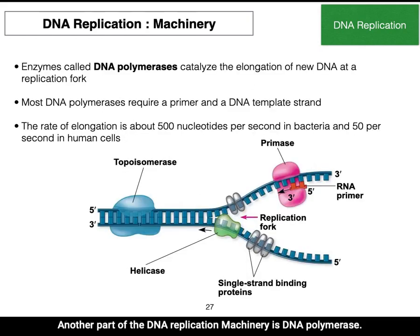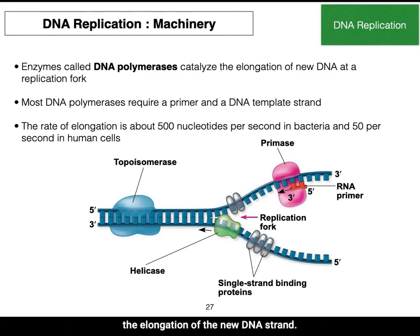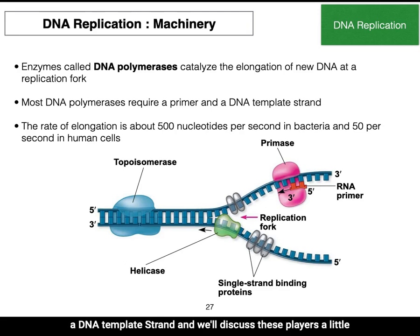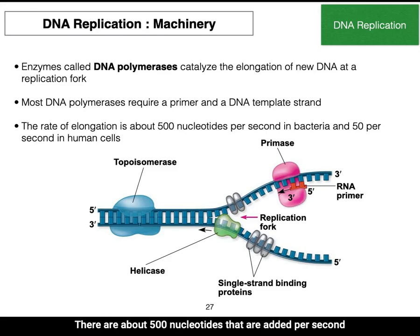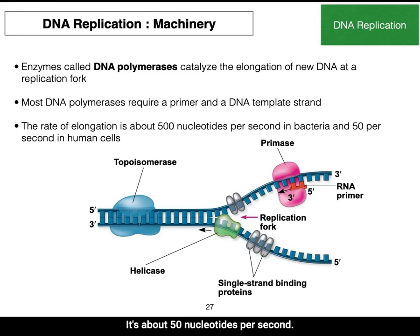DNA polymerase is responsible for catalyzing the elongation of the new DNA strand at the replication fork. It requires a primer and a DNA template strand. The rate of elongation is extremely fast — about 500 nucleotides per second in bacteria, and about 50 nucleotides per second in humans.